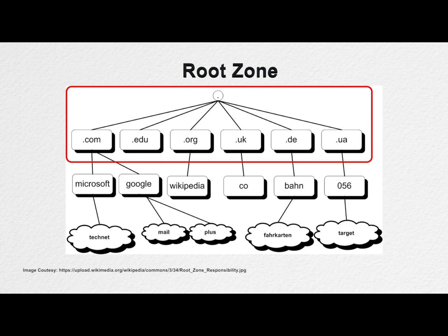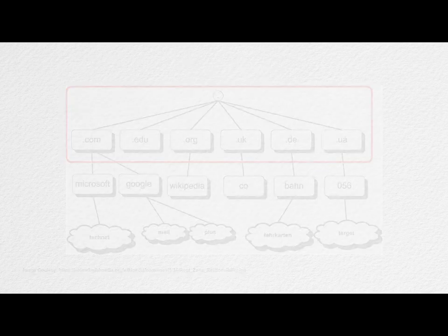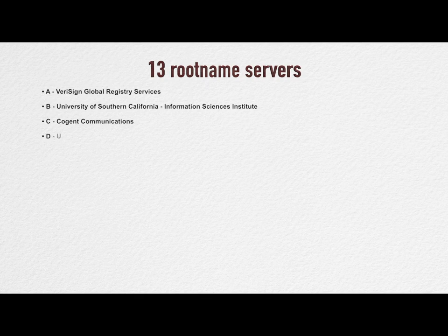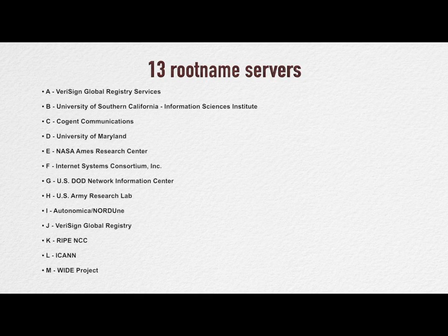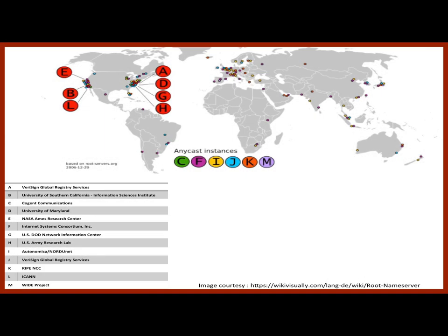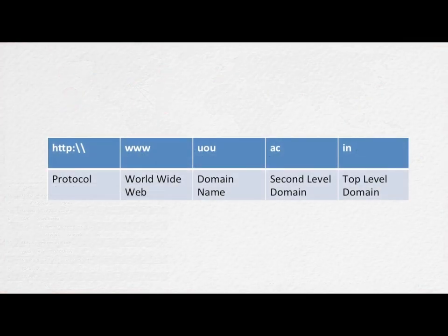The root name servers publish the root zone file to other DNS servers and clients on the internet. The root zone file describes where the authoritative servers of the DNS Top Level Domain or TLD are located. There are currently 13 root name servers. These root name servers direct the query to the appropriate top level domain name servers by reading the last part of the URL first. In our example, the URL was www.uou.ac.in, so the last part is .in.